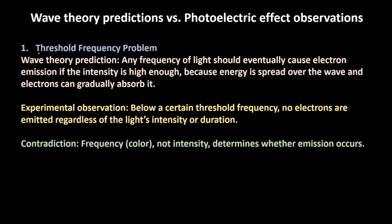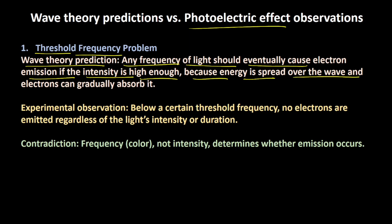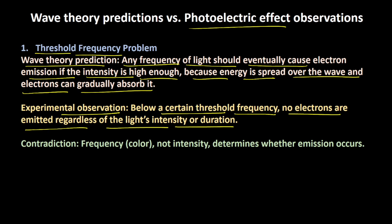The first problem is the threshold frequency problem. The photoelectric effect observation suggests that there is a minimum threshold frequency needed in order to eject the electrons. Below that, the electrons will not be ejected. But the wave theory predicted that any frequency of light should eventually cause electron emission if the intensity is high enough, because energy is spread out over the wave and electrons can gradually absorb it. The experimental observation suggests that below a certain threshold frequency, no electrons are emitted regardless of the light's intensity or duration. This is a clear contradiction — frequency, not intensity, determines whether emission occurs.